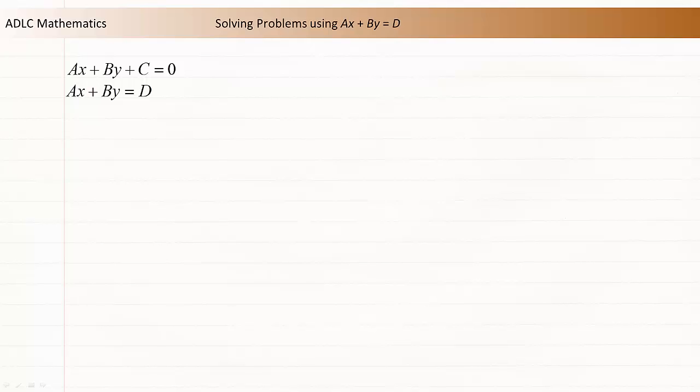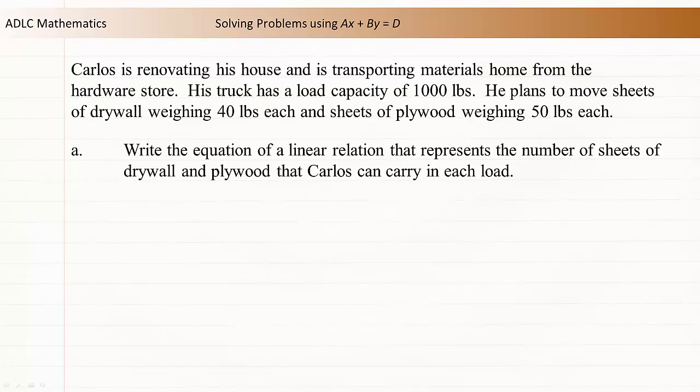Let's look at an example of a problem that can be solved using this form. Carlos is renovating his house and is transporting materials home from the hardware store. His truck has a load capacity of 1,000 pounds. He plans to have sheets of drywall weighing 40 pounds each and sheets of plywood weighing 50 pounds each.